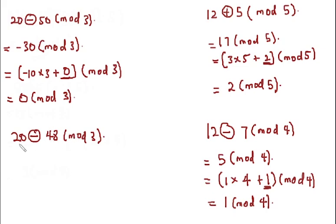You can pause the video and try to solve this one yourself. So like we've done before, you're simply going to be saying 20 minus 48. So 20 minus 48 is equal to minus 28 modulo 3.